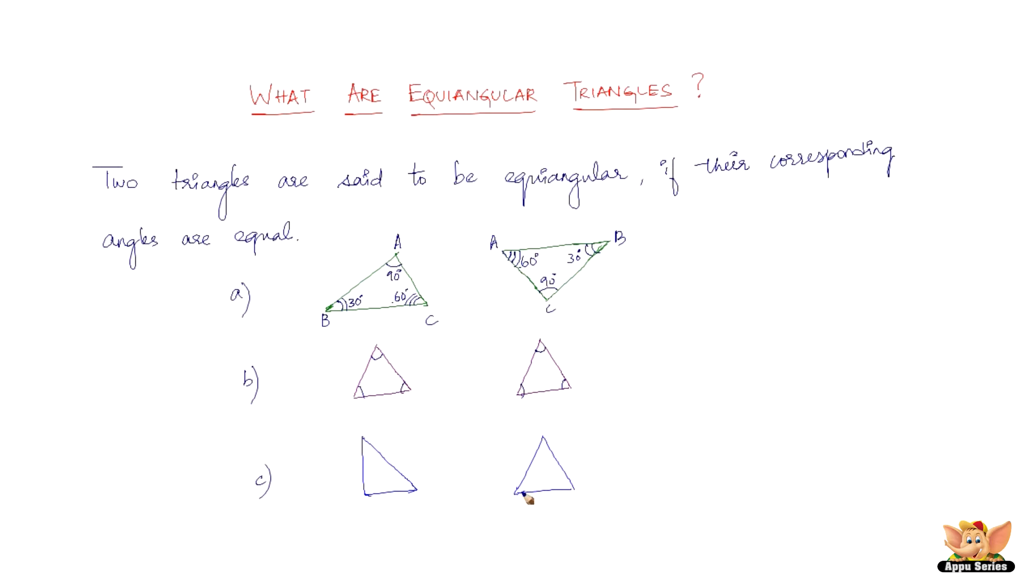Now if you're asking what is NOT an equiangular triangle, here's an example. We've got one right angle here, but here we do not have a right angle at all. With just this one observation, you can straightaway say these two triangles are not equiangular, because all three angles of a triangle should equal the other three angles only then are they equiangular.